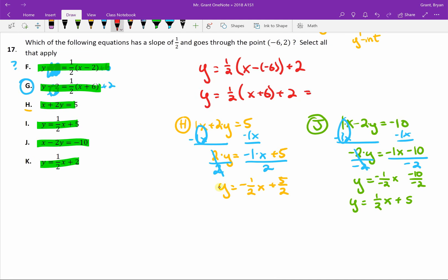So to do that, I'm going to go ahead and distribute the one half. So I get one half x, half of six is three, and we need to continue. Three plus two is five. All of these are the same equation, but let's see if this matches anything we've seen so far.